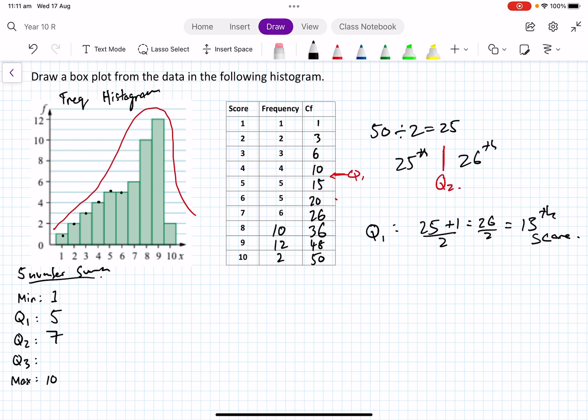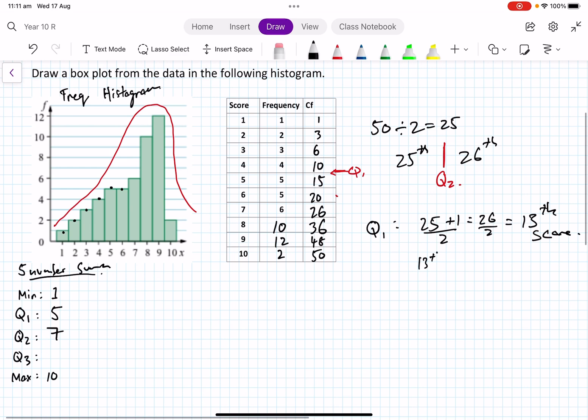The 13th score is 5. Now we look at the third quartile, Q3. Well this is the one that's a bit trickier. We've got 26 and we have to count 13 scores up. So we've got 26 to 50 is 25 scores, and then we have to find halfway.